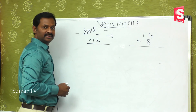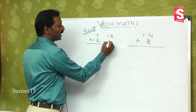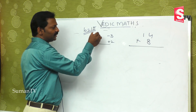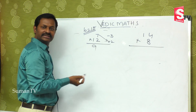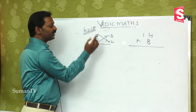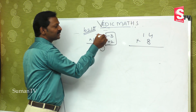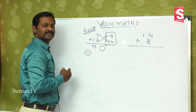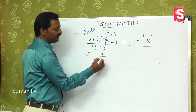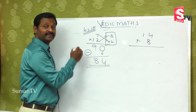The base value is 10. 7 is less than 10 by 3, so minus 3. And 12 is greater than 10 by 2, so plus 2. As per the previous method, 7 plus 2 is 9 — the first part of the answer. Since the base is 10 we put a 0. Then minus into plus is minus, so 3 times 2 is 6, giving us 84 as the answer.